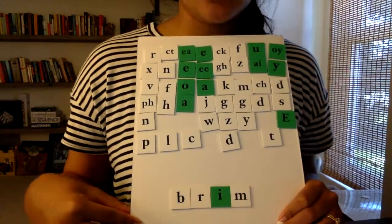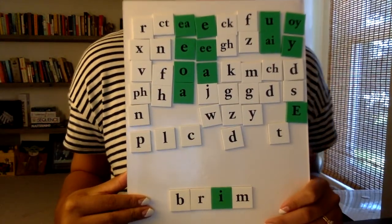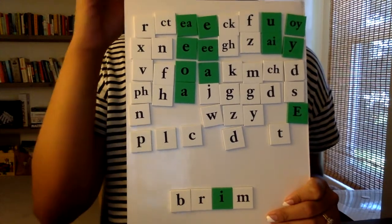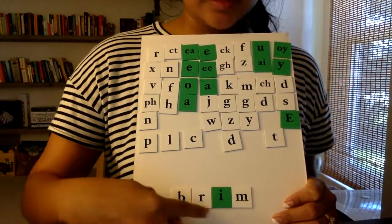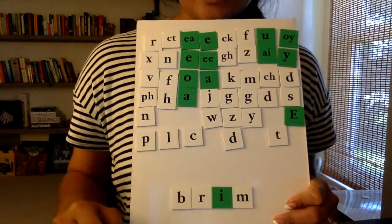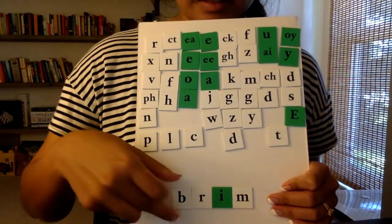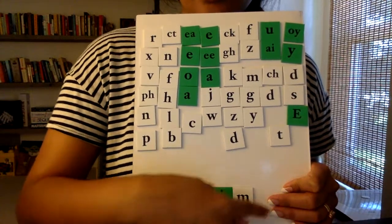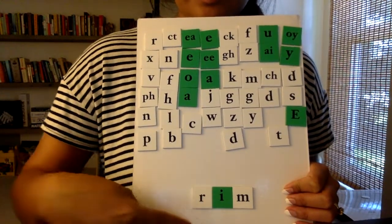Now let's change the word brim to 'rim'. Brim to rim — those two words rhyme. So I know I'm going to keep this part the same. But I don't hear a B sound at the beginning of rim, so I'm going to take out the B. And that's the word rim: R, I, M — rim.